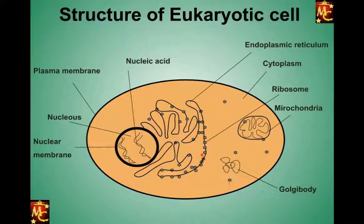The synthesized protein is then transferred to the Golgi body. When the protein reaches the Golgi body, the Golgi body matures it, sorts it according to need, and sends it to different places. Here is the Golgi body.